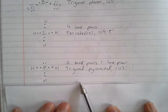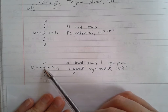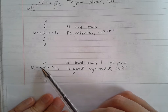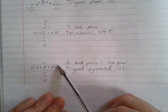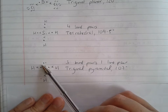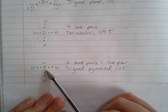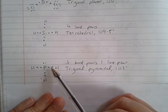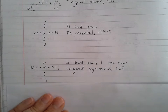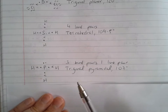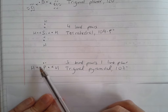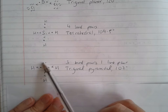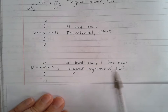The next one is PH₃. Phosphorus is in group five and it's forming three bonds, using three of its five electrons. That leaves phosphorus with two electrons not involved in bonding, sitting as a lone pair. I've got three bond pairs and one lone pair, which gives a trigonal pyramidal shape with a bond angle of 107 degrees. Remember, the lone pair repels more strongly than bond pairs, so it takes up more space and gives an angle of 107 degrees.